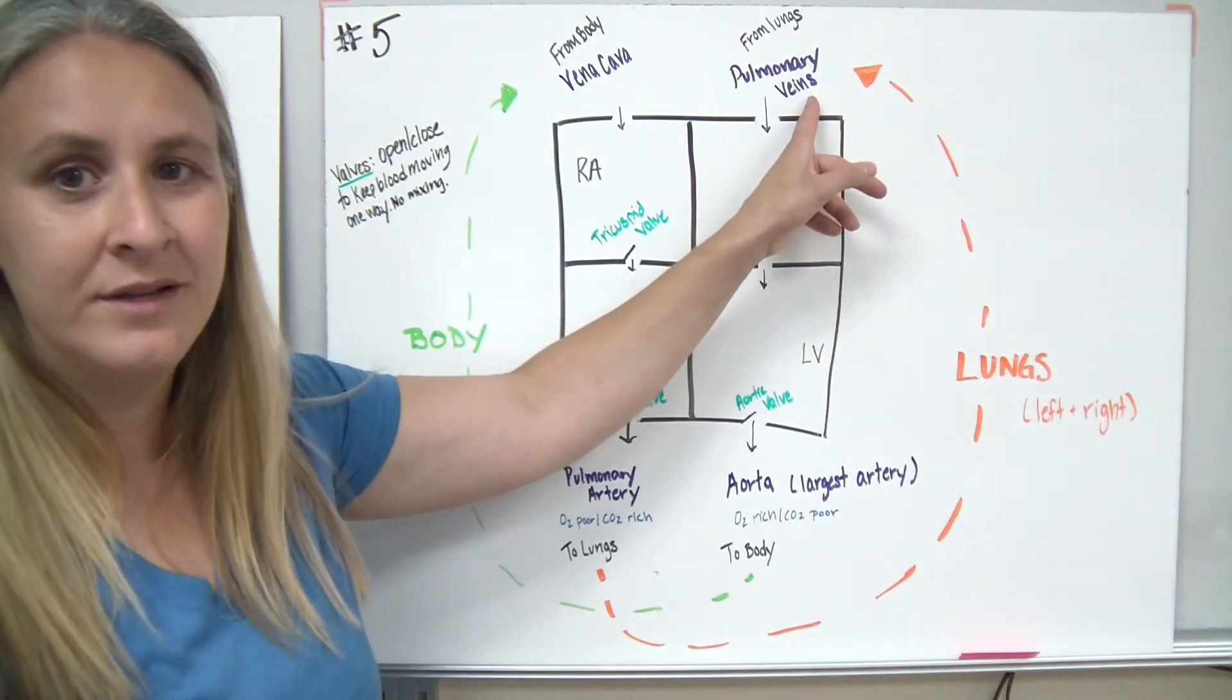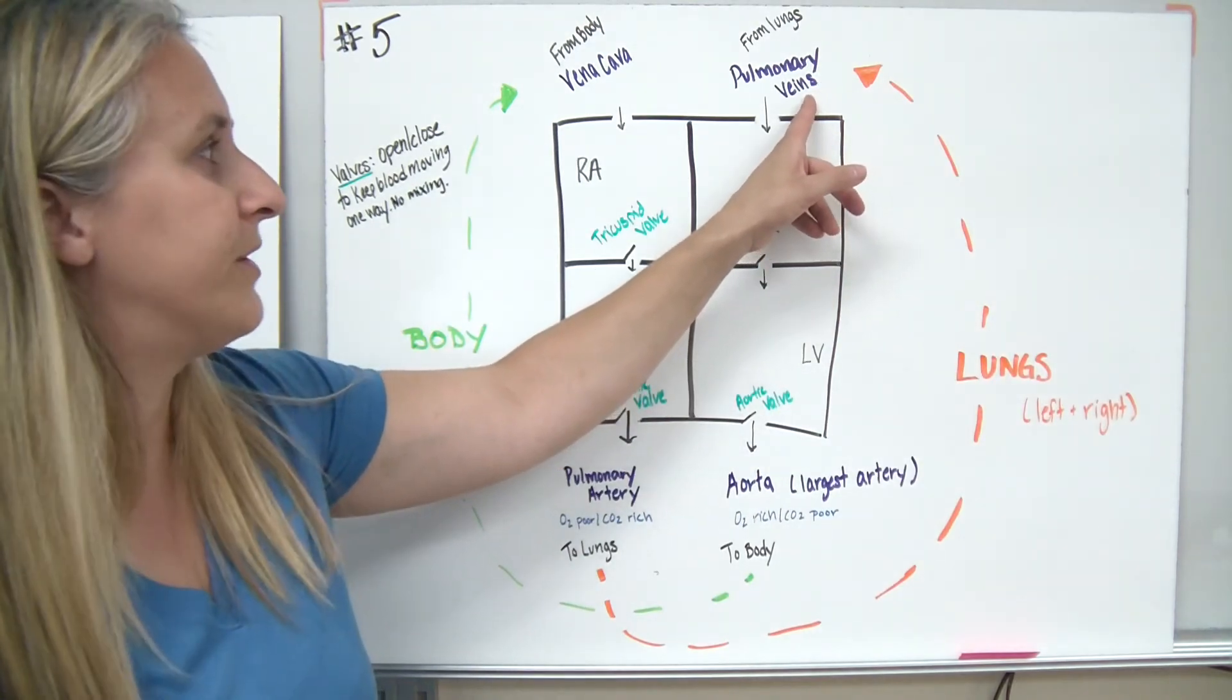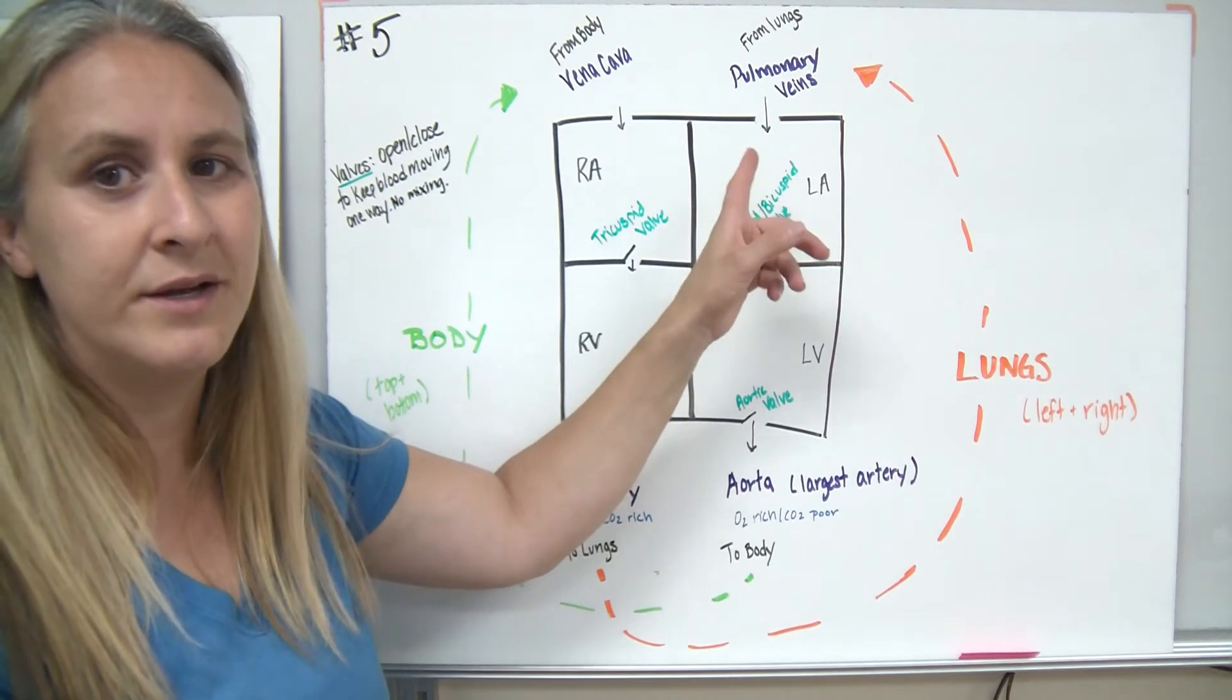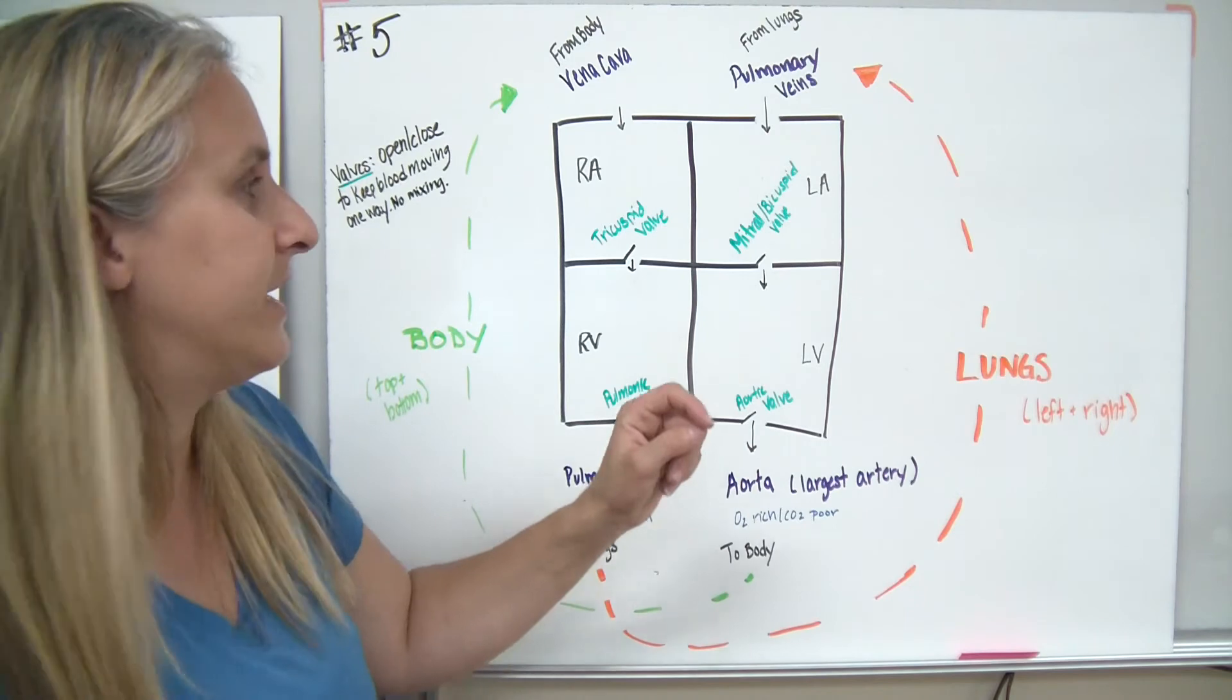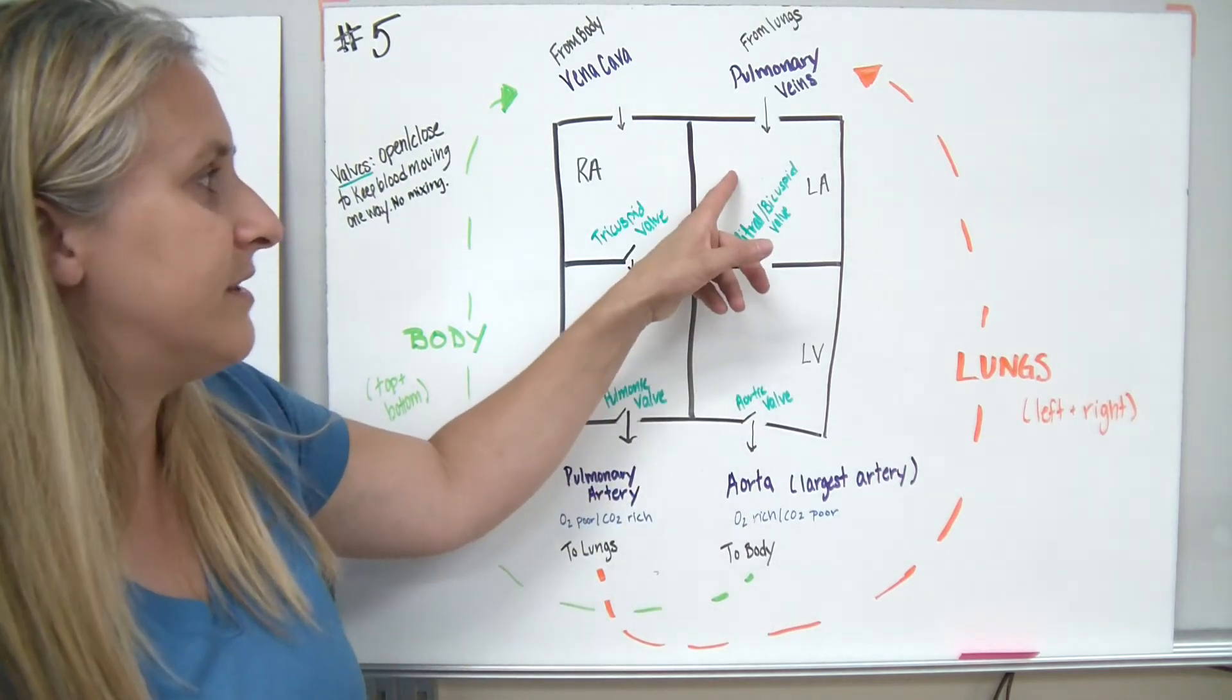It's then going to come back from the lungs through what are called the pulmonary veins. Remember, veins take blood back towards the heart. But we came from the lungs, so this one happens to be very high in oxygen now. It comes into the left atrium, the upper chamber.